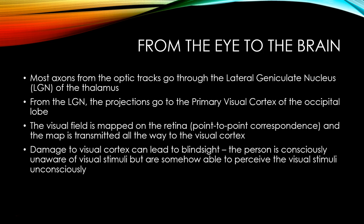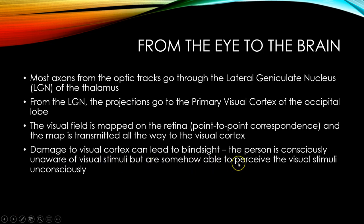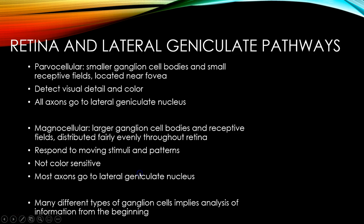There are certain areas that process motion, and certain areas that process color. Somehow, even though all this visual information is spread out throughout our visual processing areas, we're able to see a very cohesive visual scene. Most axons from the optic tracts go through the LGN of the thalamus, then to primary visual cortex in the occipital lobe. The visual field is mapped on the retina in terms of point-to-point correspondence, and that map is transmitted all the way to the visual cortex. Damage to visual cortex can lead to blindsight, where the person is consciously unaware of visual stimuli but somehow able to perceive them unconsciously.